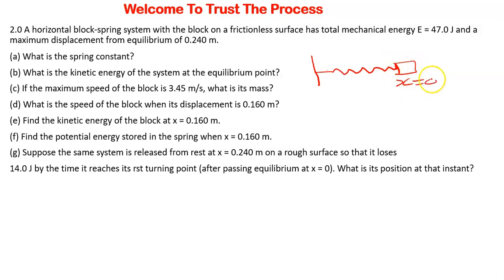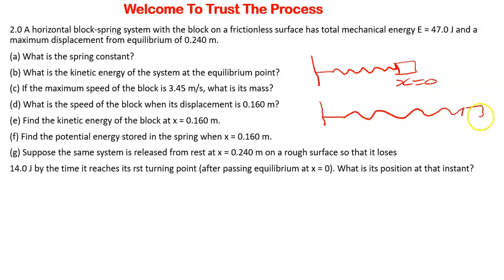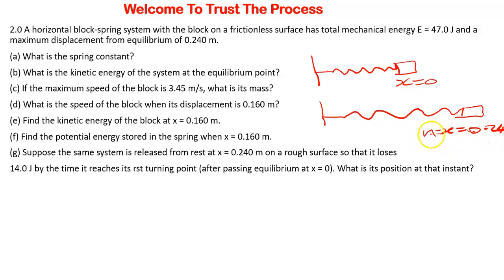When the spring is undisturbed, that is what we have. And then it is going to be stretched to that amount. So this is going to be x, which is equal to 0.24. That is the maximum displacement, so this can also be equal to A — the amplitude, because the maximum displacement is nothing but the amplitude.